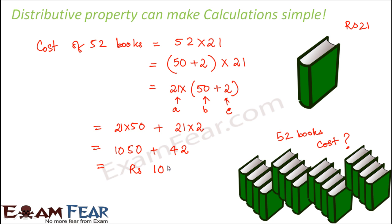And now you can very easily calculate the cost of 52 books. You see making use of the distributive property you could make your calculations simpler and easier.